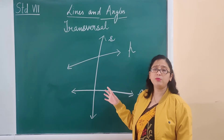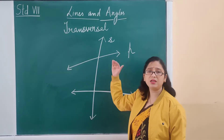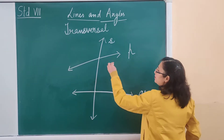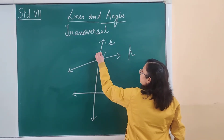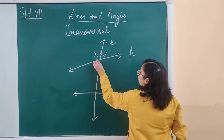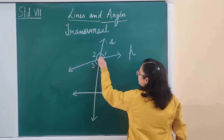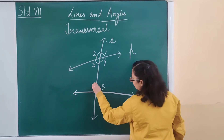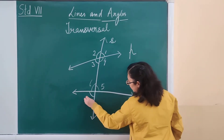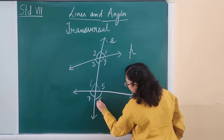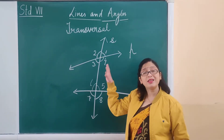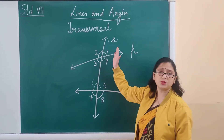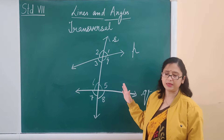What are the angles which are formed by the transversal when it intersects two or more given lines? These are angle 1, angle 2, angle 3, angle 4, angle 5, angle 6, angle 7, and angle 8.